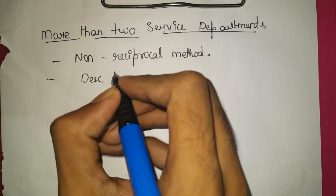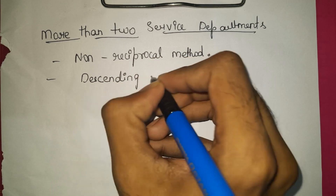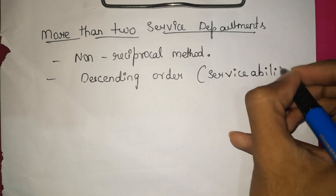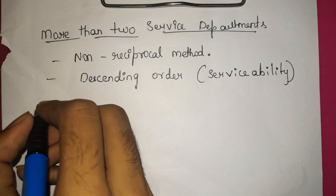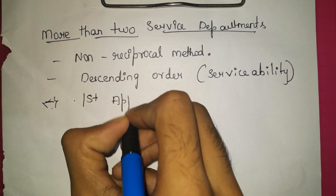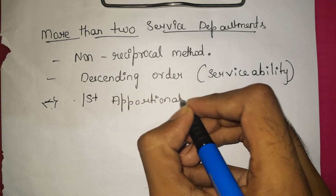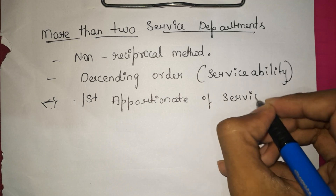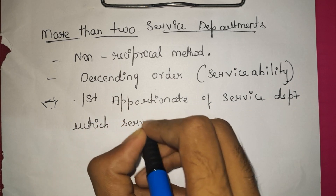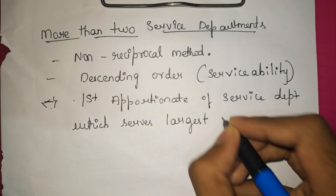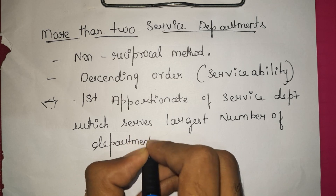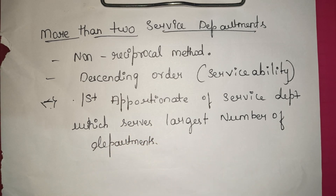All the departments are to be arranged in descending order of their serviceability — meaning how much quantity of service they provide, they should be arranged in descending order. Next, we need to apportion the cost of the service department which serves the largest number of departments first. Those service departments which provide services to more departments have to be apportioned first. These are the basic rules for solving the problem when more than two departments are given.